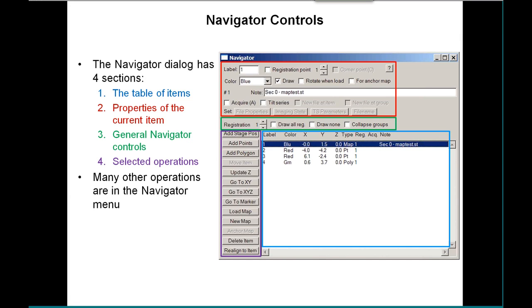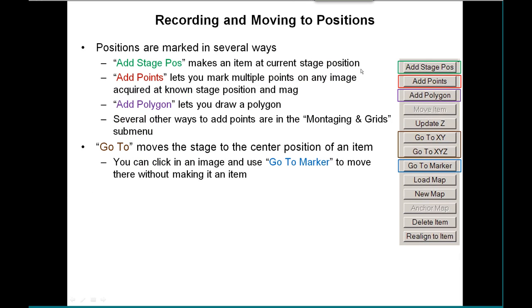There are several different ways to record positions. There's the simple 'Add Stage Position,' which makes an item at the current stage position. 'Add Points' is much more frequently used — on any image with a known stage position and magnification, you can mark down multiple points. 'Add Polygon' is similar but adds a single polygon. There are also several other ways to add points in the Montaging and Grids submenu.